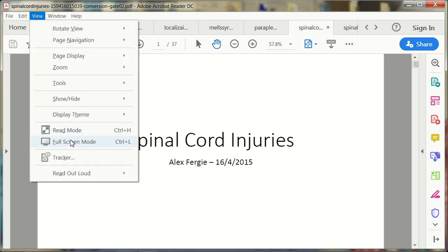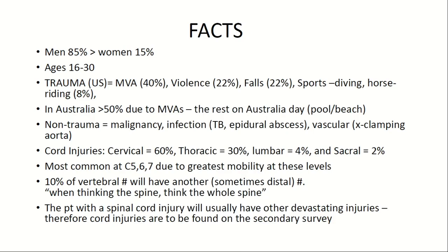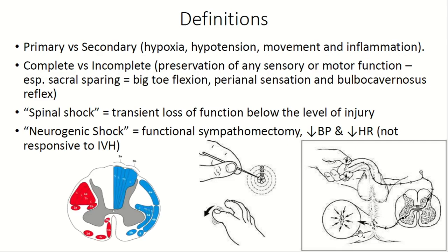Overview: males are 85% more prone to spinal cord injury than females, with peak age 20-30 years. Causes include motor vehicle accidents 40%, violence 22%, falls 22%, and sports such as horse riding 8%. Non-traumatic causes include malignancy, infection, and vascular causes. Cervical injury accounts for 60%, thoracic 30%, lumbar 4%, sacral 2%. Most commonly injured levels are C5-C6-C7 due to greatest mobility. Always image the whole spine as there may be non-contiguous fractures at multiple levels.